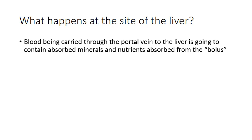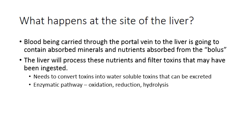At the liver, blood carried through the portal vein contains absorbed minerals and nutrients from the food bolus. In the small intestine there's a lot of absorption and secretion taking place, and all those minerals and nutrients that were absorbed go to the liver through the portal vein. The liver then processes these nutrients and also filters toxins that might have been ingested, converting them into water-soluble forms that can be secreted.